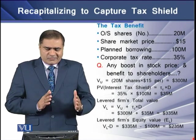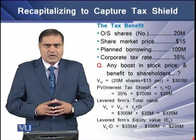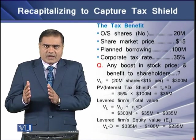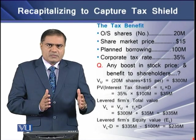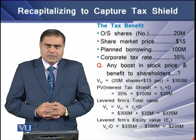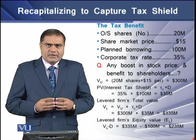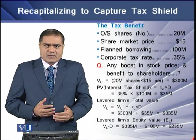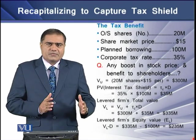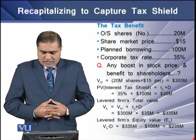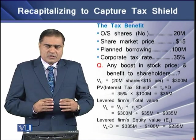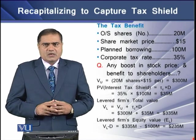The levered firm's total value is the sum of the unlevered firm's value and the present value of the interest tax shield. Adding $35 million to the unlevered firm's value of $300 million, the levered firm's value comes to $335 million. The value of levered equity is the difference between the levered firm's value and the amount of debt, which equals $235 million. So debt has reduced the value of levered equity as a result of leverage.